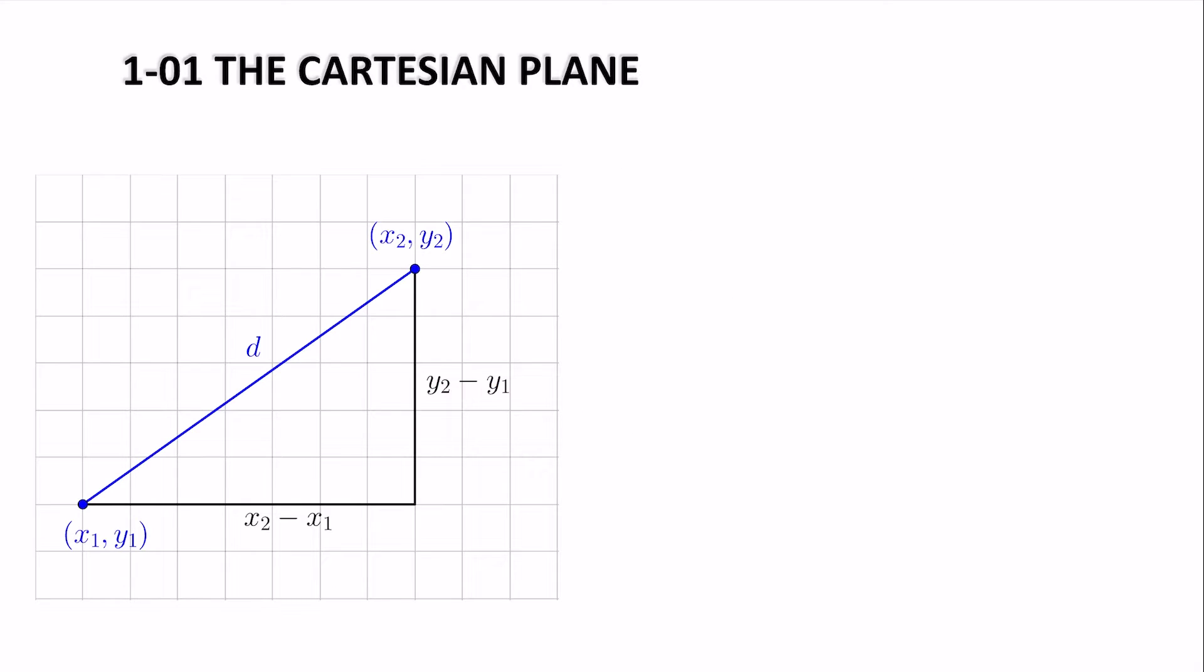Now that we can plot coordinates of points, we can use distance formula to find the distance between those points. The distance formula comes from the Pythagorean theorem. So as you can see in the graph here,